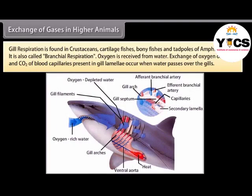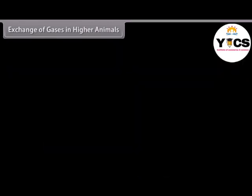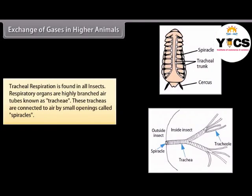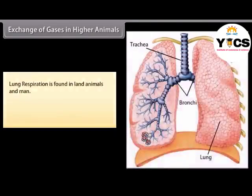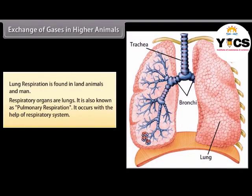Gill respiration, also called branchial respiration, is found in crustaceans, cartilaginous fishes, bony fishes, and tadpoles of amphibians. Oxygen is received from water; exchange of oxygen and CO2 occurs across gill lamellae as water passes through the gills. Tracheal respiration is found in all insects; the respiratory organs are highly branched air tubes known as trachea, connected to air by small openings called spiracles. Lung respiration, also known as pulmonary respiration, is found in land animals and man, and occurs with the help of the respiratory system.